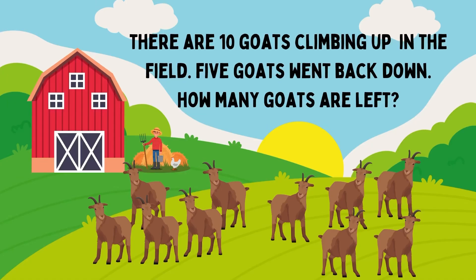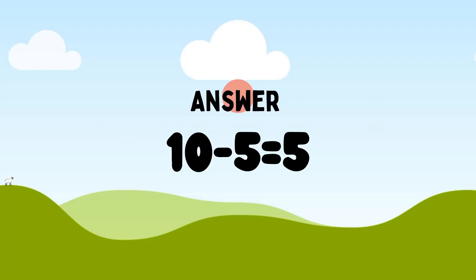Next question. There are 10 goats climbing up in the field. 5 goats went back down. How many goats are left? So, total 10 goats in the field minus 5 goats left. 10 minus 5 is equal to 5. So, 5 goats left in the field.